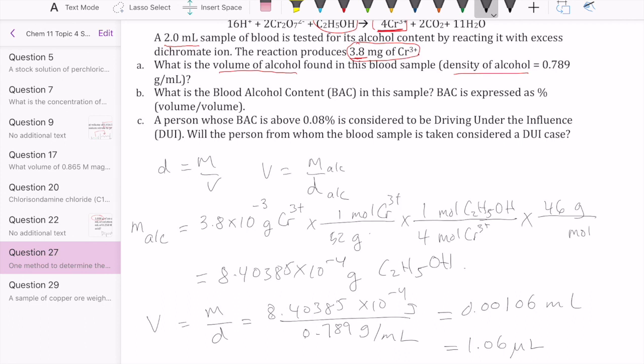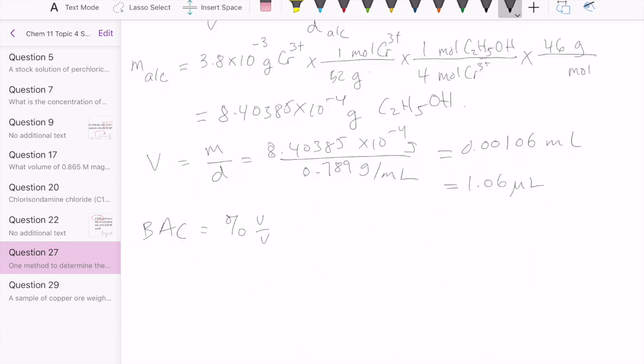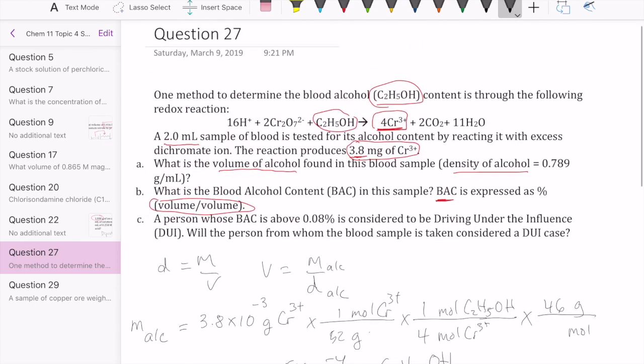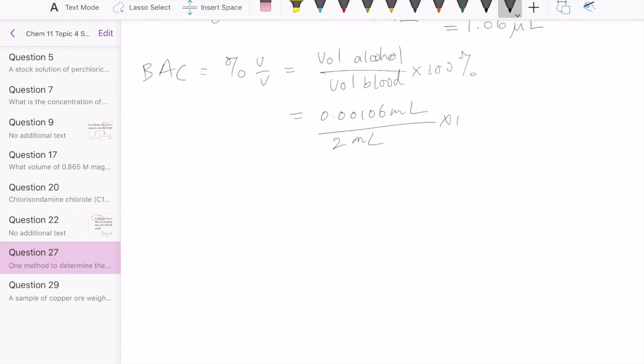The next question we were asked is, what's the blood alcohol content, if we know that blood alcohol content is expressed as percent volume of volume. So that means volume of alcohol over volume of blood times 100%. The volume of my alcohol is this, volume of blood is 2 milliliter, multiply this by 100%, we get 0.053%.